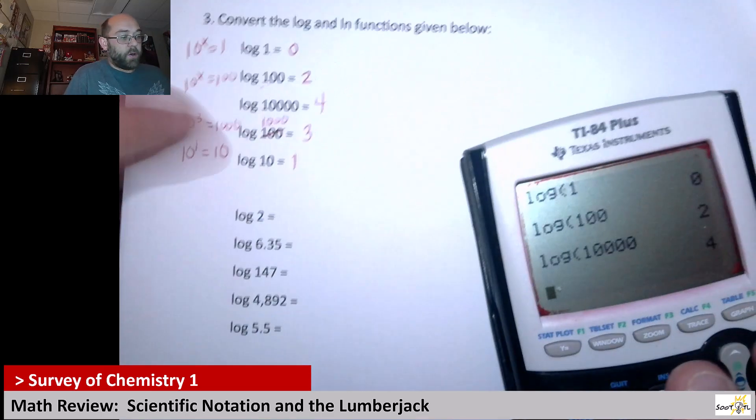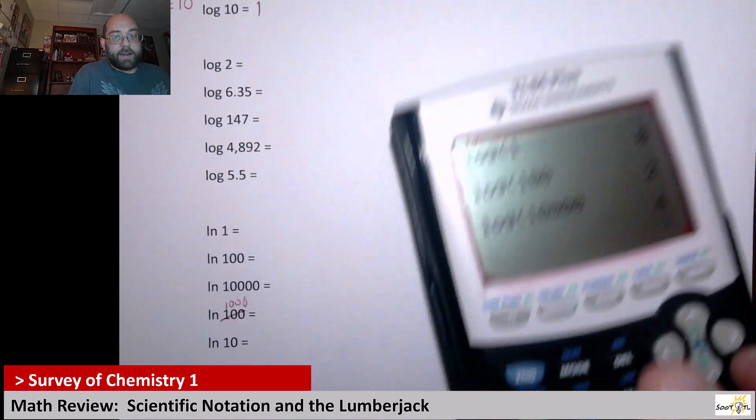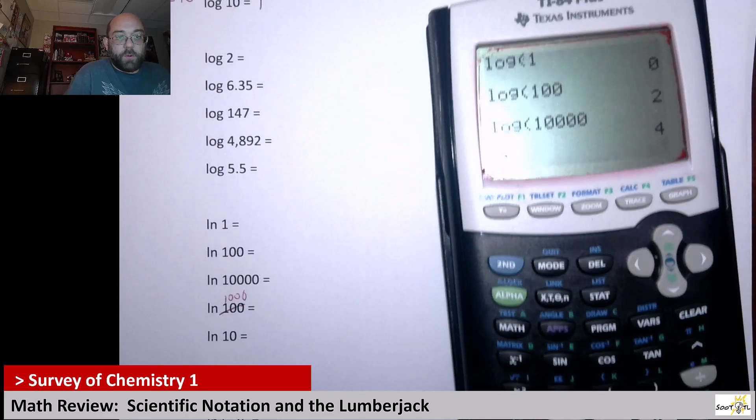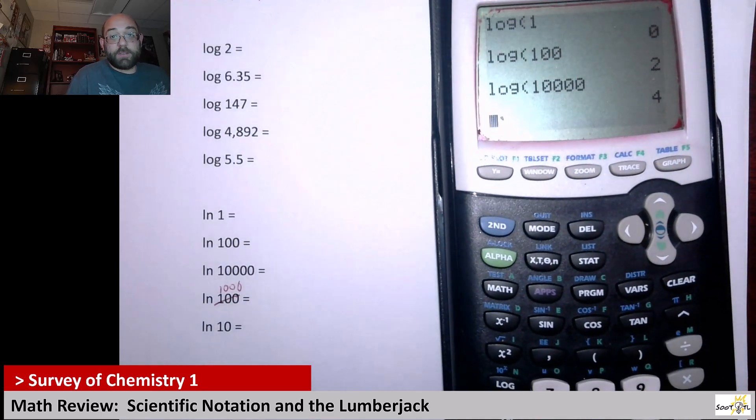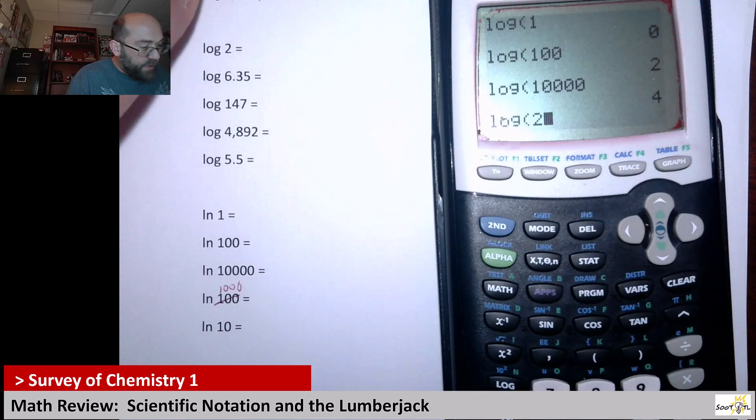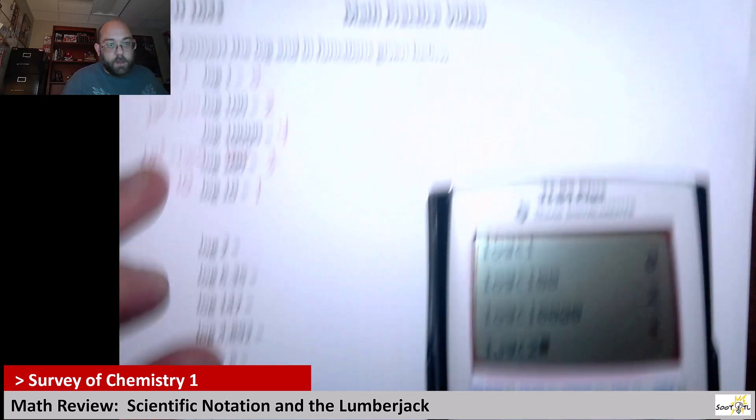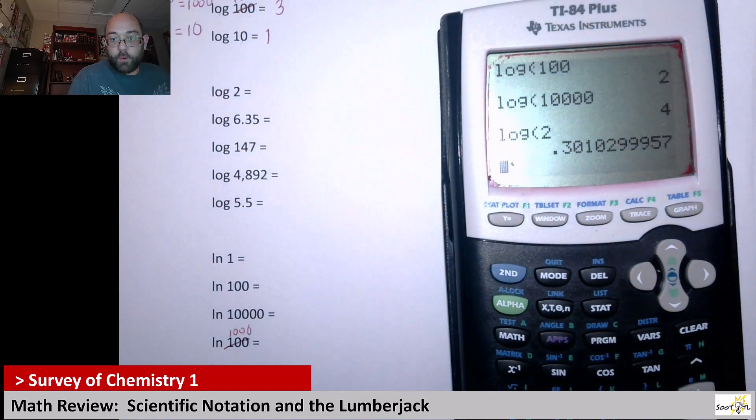Now, these other ones here that are not easily factorable by 10, we've got 2, 6.35. This is going to be a little harder. So this is where actually using your calculator becomes fundamentally important. So if we take the log of 2, we know that it should be greater than 0. We know that much, because log of 1 was 0. So it should be some number greater than 0. So let's see. What is that? 0.301.